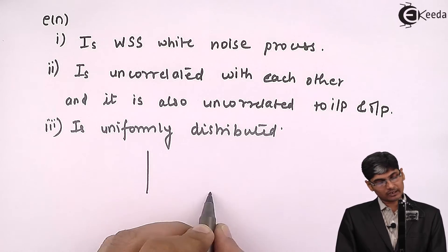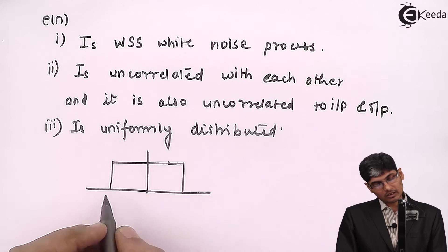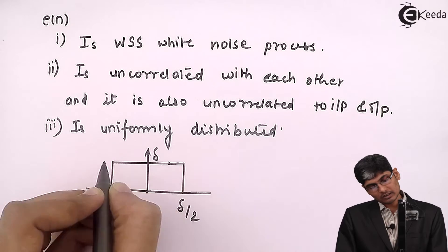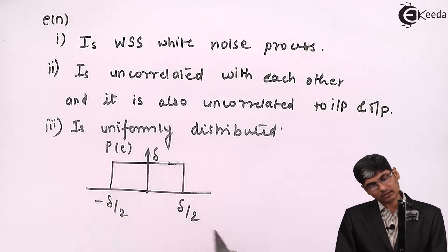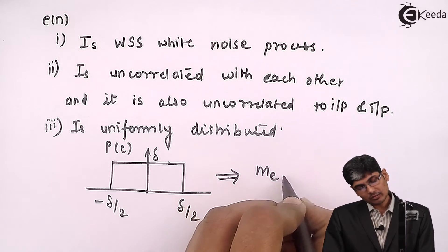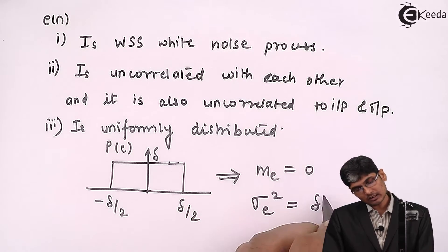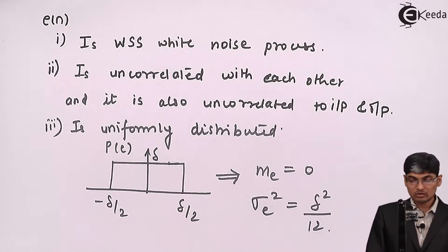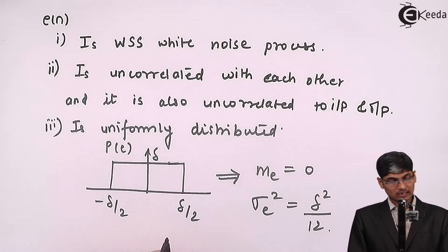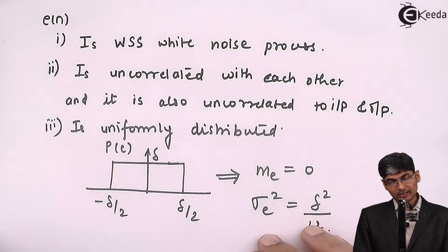With these assumptions, the probability density function for the error spans from -Δ/2 to Δ/2 with amplitude 1/Δ. This tells us that the mean of the error is 0, and the variance — which is also the power of the noise — is sigma_e² = Δ²/12.